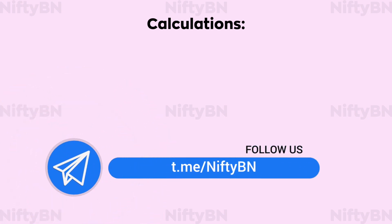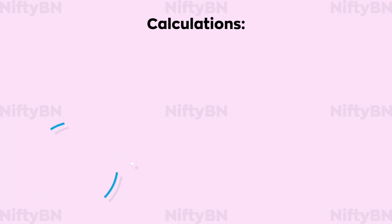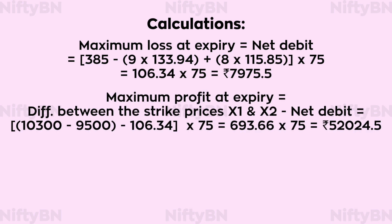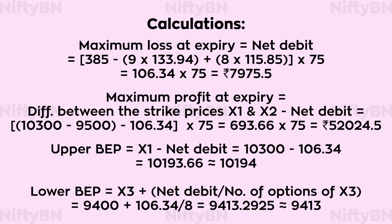Now let's look at some calculations of the sample skip strike butterfly with puts position. Maximum loss at expiry is equal to net debit, which comes to about Rs 7,976. Maximum profit at expiry is equal to the difference between the strike prices X1 and X2 minus net debit, which comes to about Rs 52,025. The upper breakeven point equals strike price X1 minus net debit, which comes to about 10,194. The lower breakeven point equals strike price X3 plus net debit divided by the number of options at strike price X3, which comes to about 9,413.